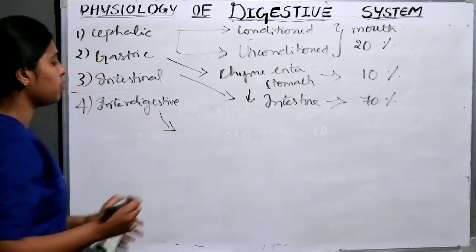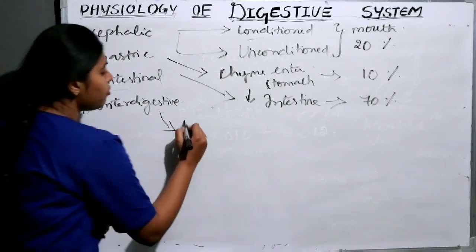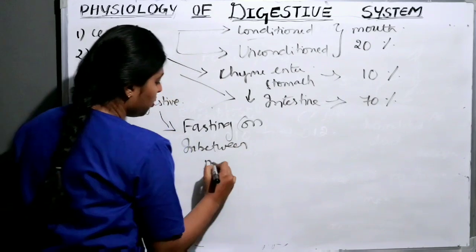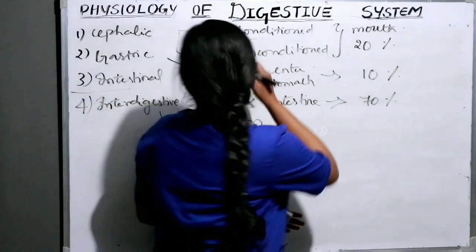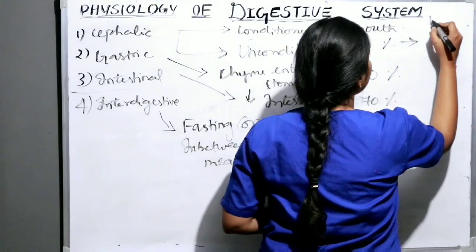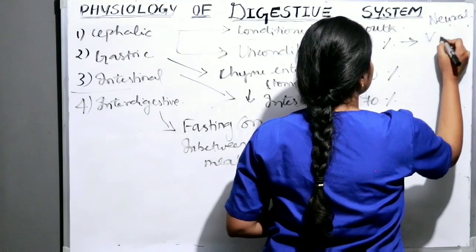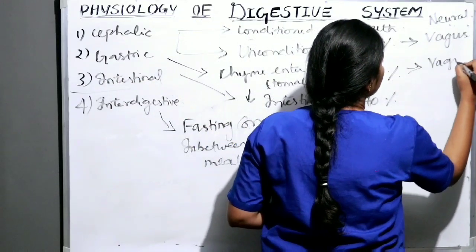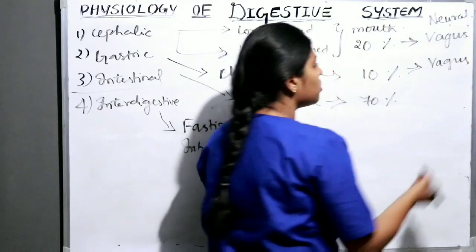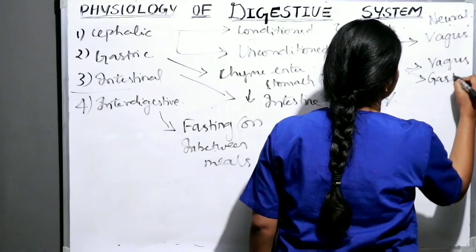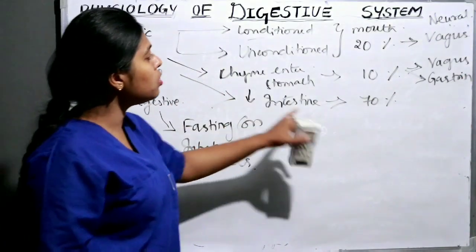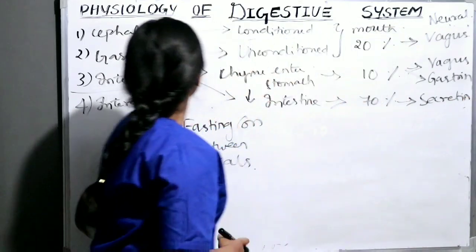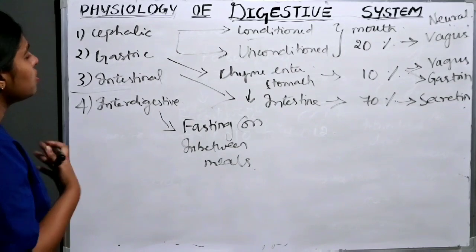The interdigestive phase is when pancreatic juice is secreted during fasting or in between meals. The cephalic phase is totally neural controlled, controlled by the vagus nerve. The gastric phase is controlled by both neural and hormonal mechanisms, via the vagus nerve and gastrin. The intestinal phase is totally controlled by hormones, specifically secretin. These are the phases of secretion of pancreatic juice.